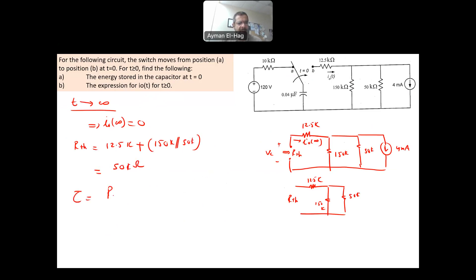And from this, the time constant is equal to Rth times C, which is equal to 50 times 10 to power 3 times C, which is 0.04 times 10 to minus 6. And this will give me 2 millisecond. So this is your time constant.